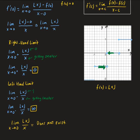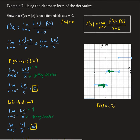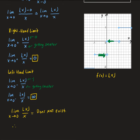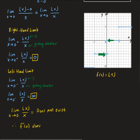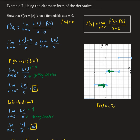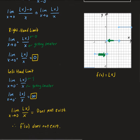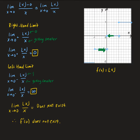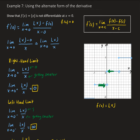Because this limit doesn't exist, that tells us that the derivative of the floor function at 0 doesn't exist. So therefore, the derivative at 0 does not exist, and that shows us that the floor function is not differentiable at x equals 0. We used the alternate form of the derivative, computed the right-hand and left-hand limits, found these two limits don't equal, so the overall limit doesn't exist, and therefore the derivative at 0 doesn't exist.